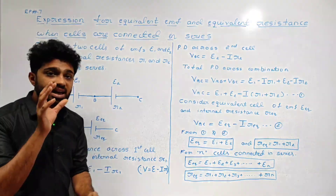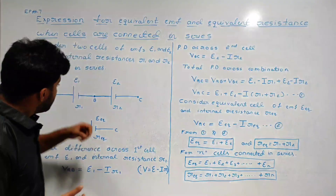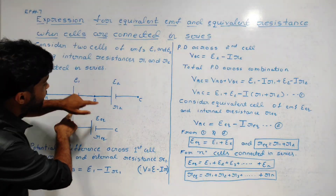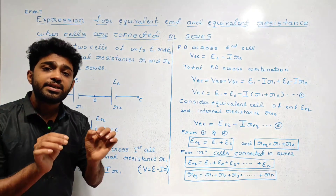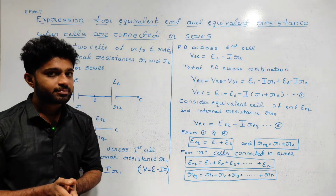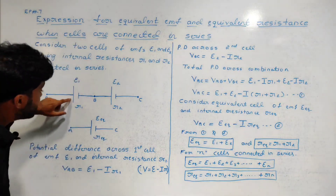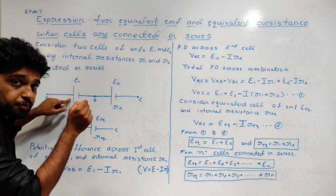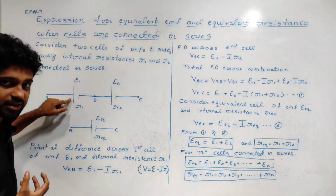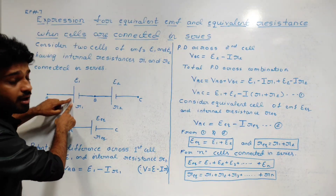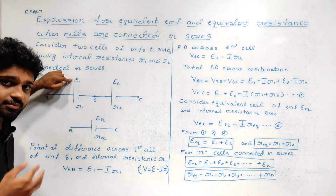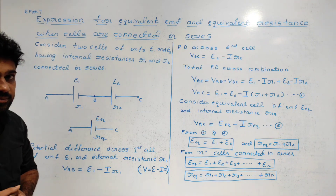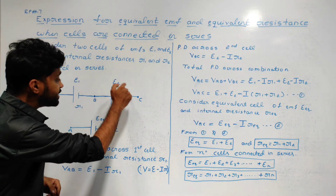In this class, the diagram is on the board. There are two cells. The first cell and the second cell are connected in series. The first cell has EMF E1 and internal resistance R1.